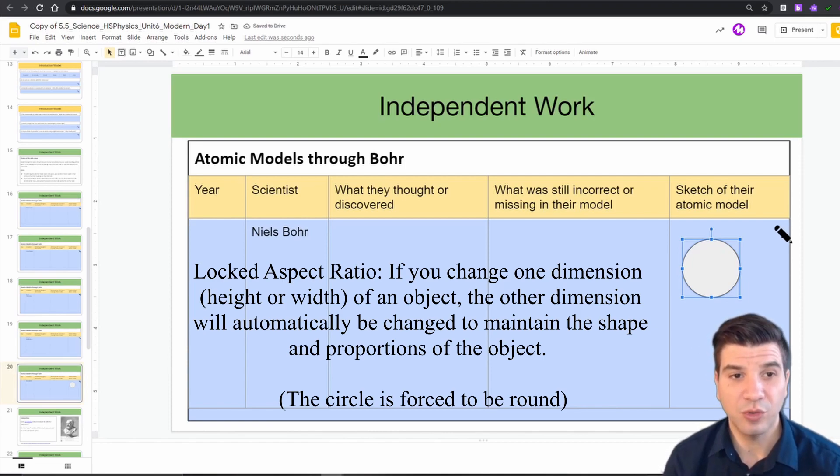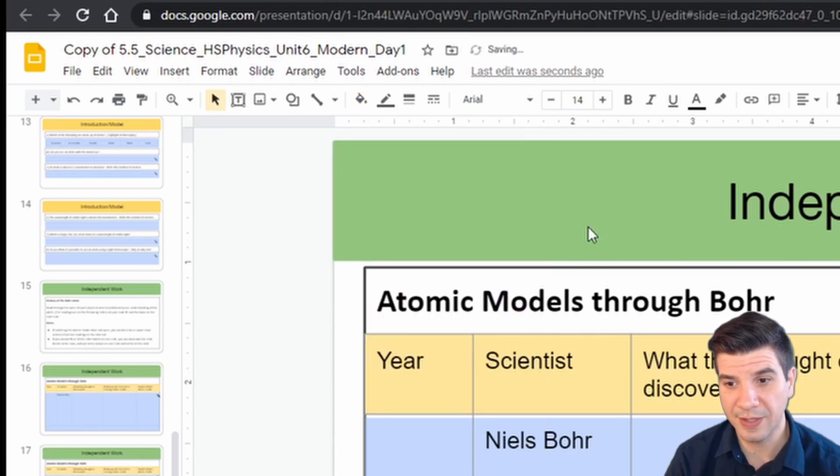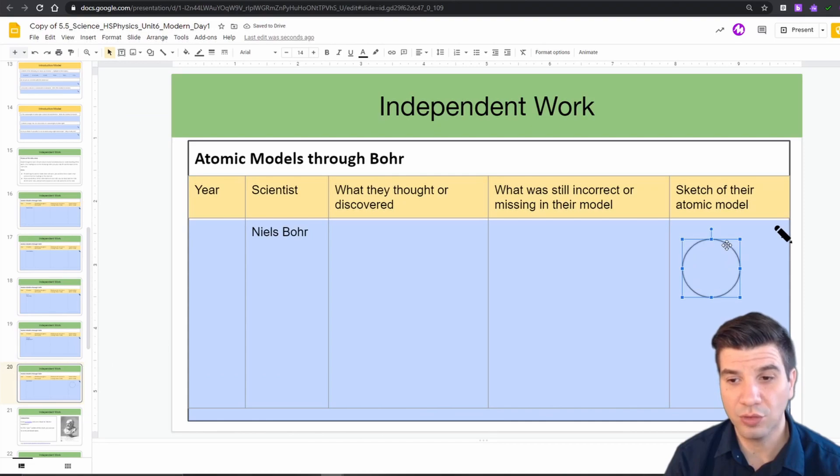Now, by default, it will be filled in. If you want a transparent circle, just go to your fill color button. Click on that and you have an option for transparent. So now you have an orbital ring if you'd like.